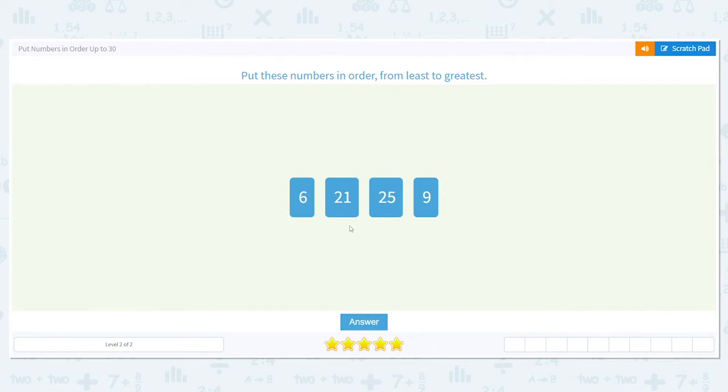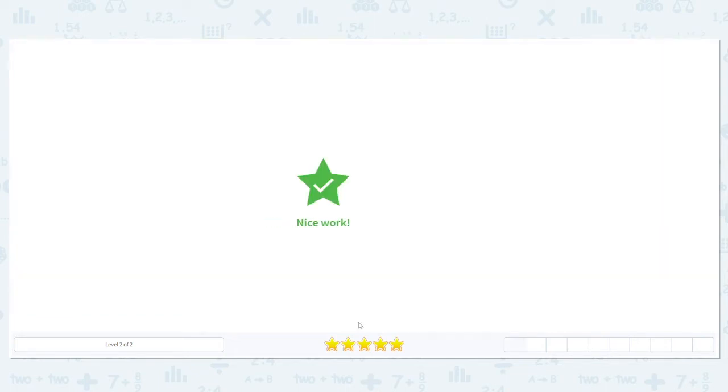Who would be the next youngest? Someone that's 21, 25, or 9? A nine-year-old would come next. And then 21 and 25. They're already set up for us. Good job! Let's try another.